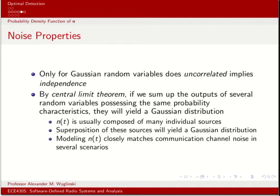One important note: for Gaussian random variables only, uncorrelatedness implies independence — no other random variable has this property. Also, by the central limit theorem, if we sum the outputs of several random variables with the same probability characteristics, they yield a Gaussian distribution. That's why we often model channel noise as Gaussian — because it's the sum of many different noise sources, so we can reasonably approximate that the noise will be Gaussian.